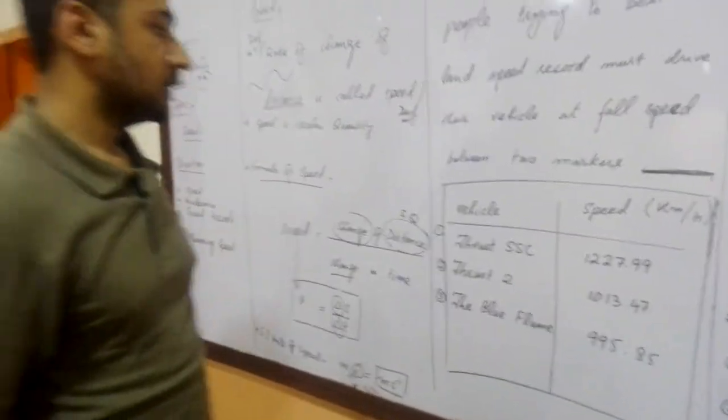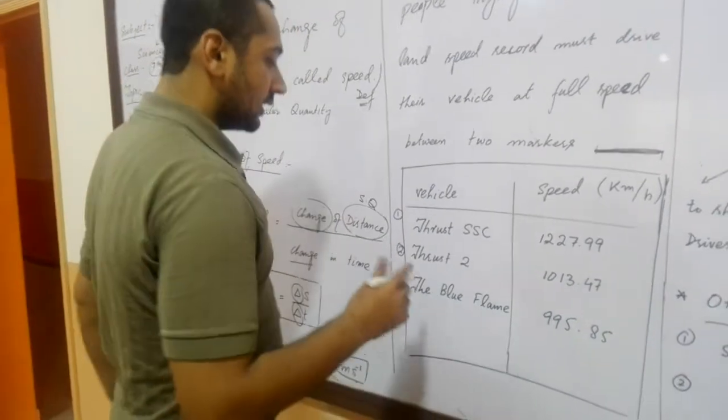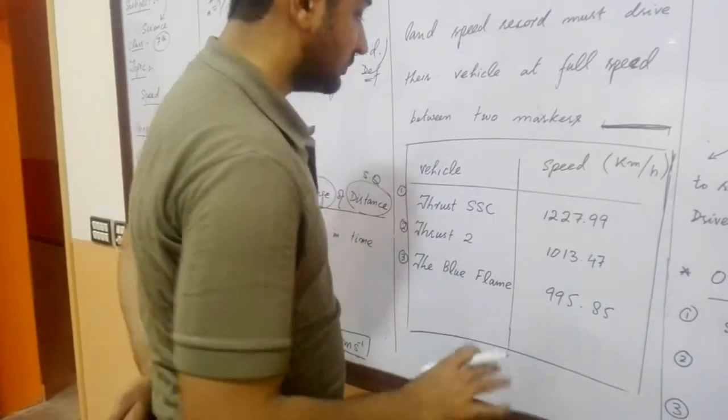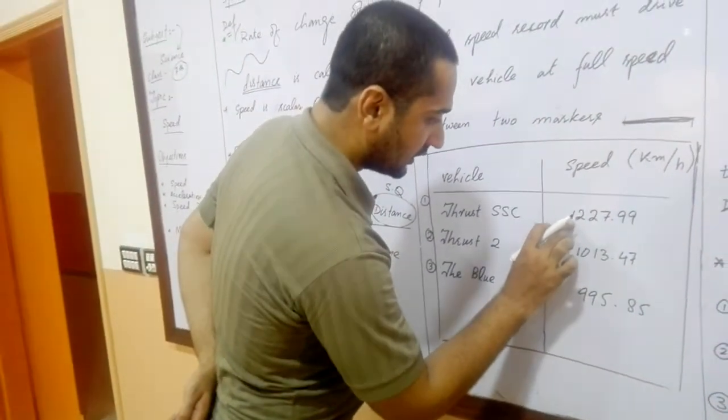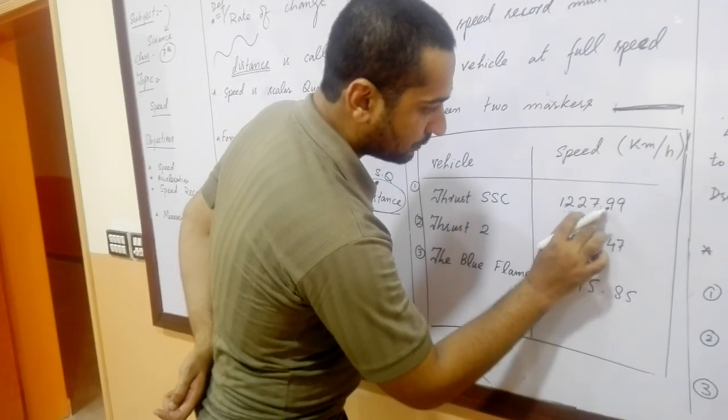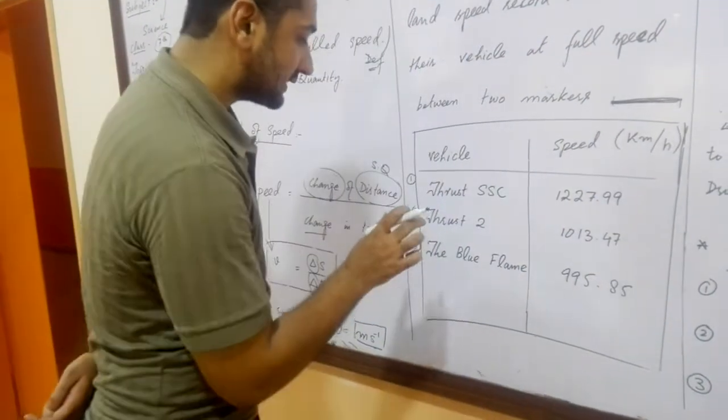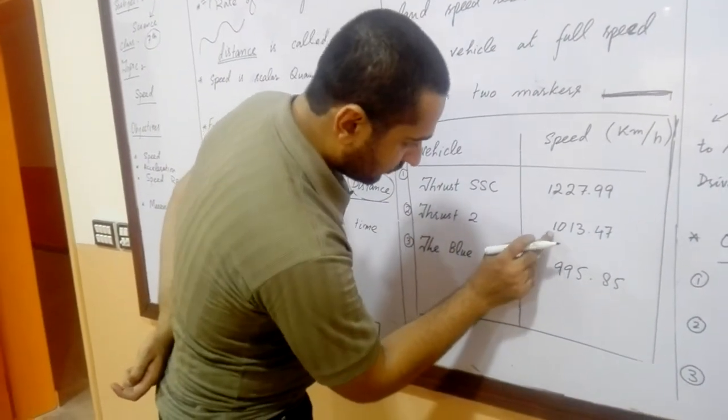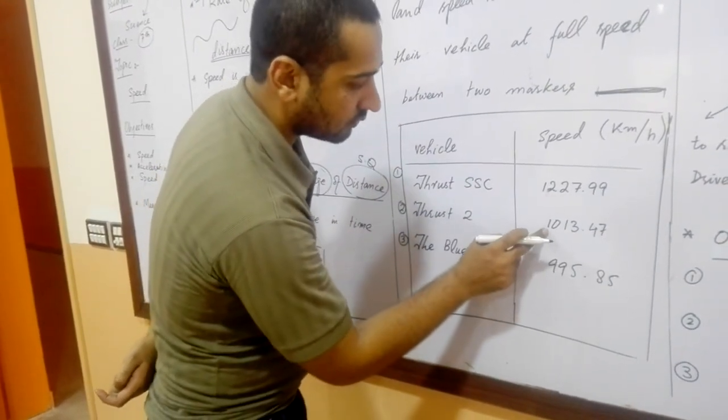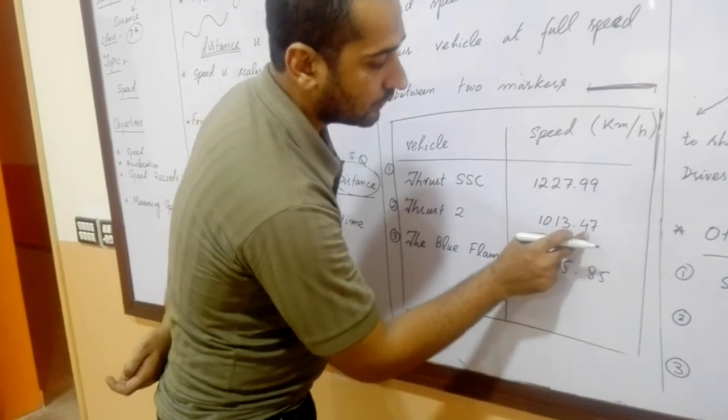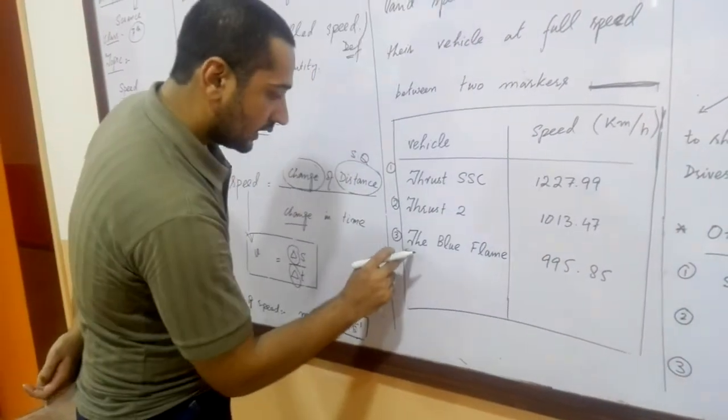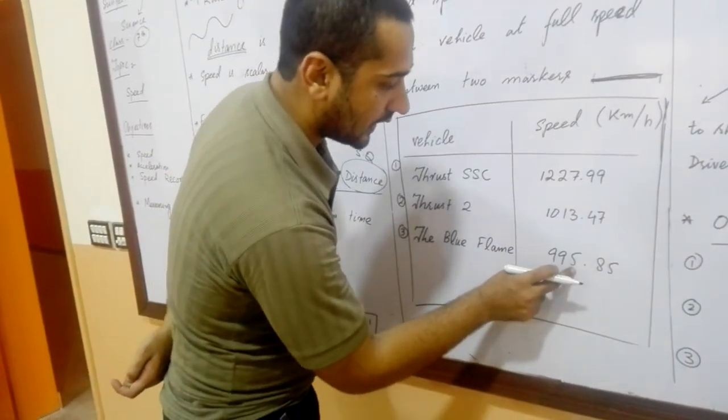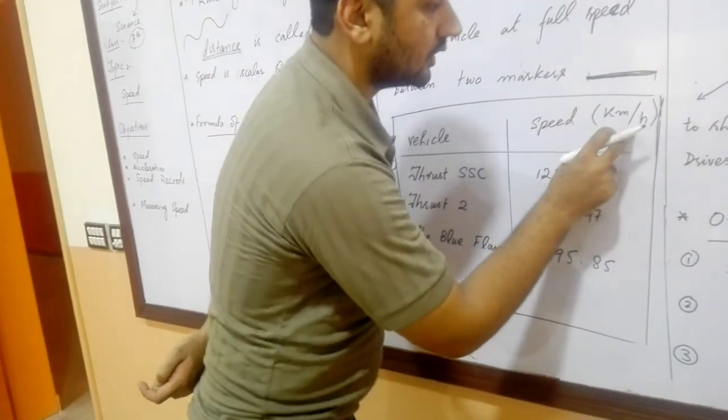Full speed of vehicle is measured at different stages of time. And up to now the Thrust SSC is the highest speed vehicle, which speed was 1227.99 km per hour. And the second vehicle was Thrust 2, which speed was 1013.47 km per hour. And the third one is Blue Flame: 995.85 km per hour.